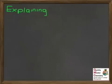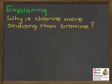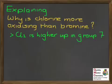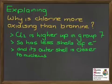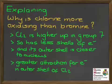We can also be asked to explain why halogens higher up in group 7 are more oxidising than those lower down. For example: why is chlorine more oxidising than bromine? Chlorine is higher up in group 7, so it has fewer shells of electrons, meaning its outer shell is closer to the nucleus. The nucleus is positive and the electrons are negative — opposite charges attract — so there is greater attraction for electrons in the outer shell of chlorine than for that of bromine.